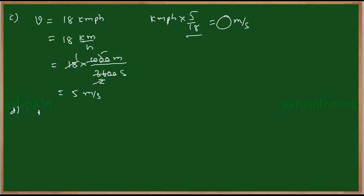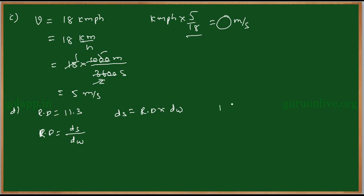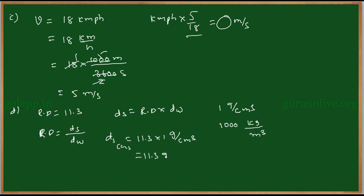For part D, the relative density of lead is 11.3. Relative density is defined as the density of the substance divided by the density of water. Therefore, density of substance = relative density × density of water. The density of water in CGS system is 1 gram per centimeter cube, so density of lead = 11.3 × 1 = 11.3 gram per centimeter cube. In SI system, density of water is 1000 kg per meter cube, so density of lead = 11.3 × 10³ kg per meter cube.